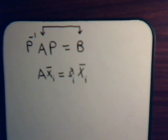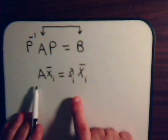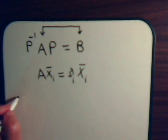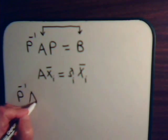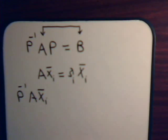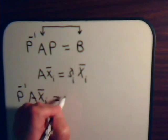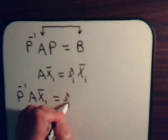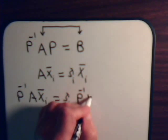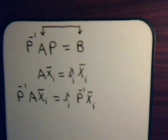Now what we want to do is multiply both sides of this equation by P inverse. So we have P inverse A times that eigenvector equals P inverse times lambda_i times the eigenvector, simply by multiplying both sides by P inverse.